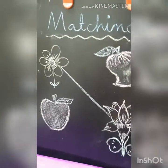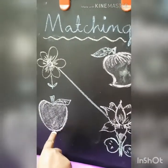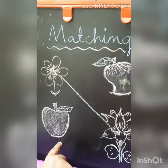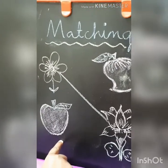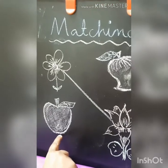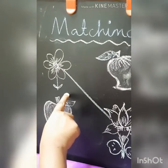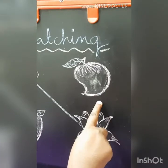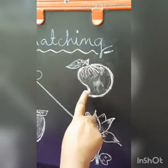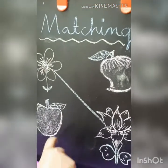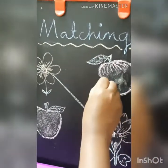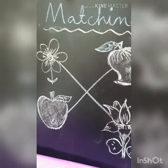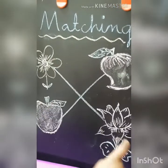Very good. Look at here. What is this? This is an apple. You have to match the apple. Apple is a fruit, so you have to match the fruit. Where is the fruit here? Is this fruit? No. Is this fruit? No. Is this fruit? Yes. So you have to match the fruit to fruit. This is apple. This is mango. Very good, children.